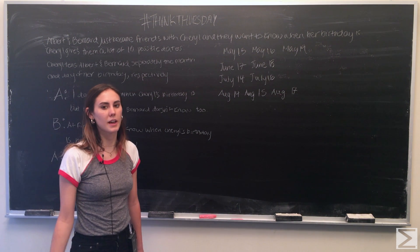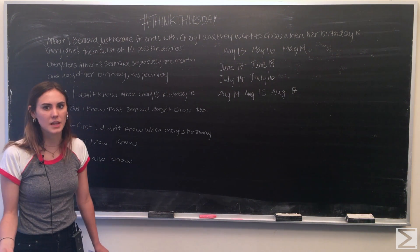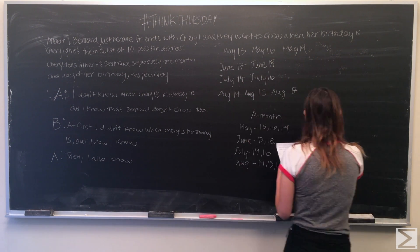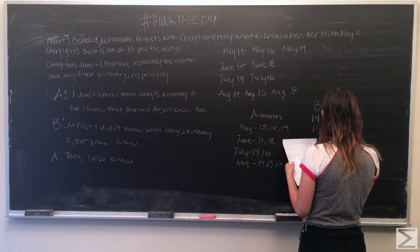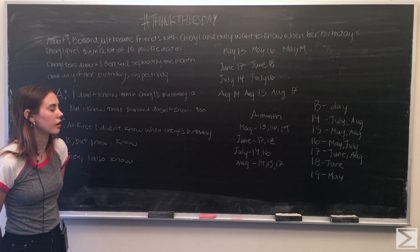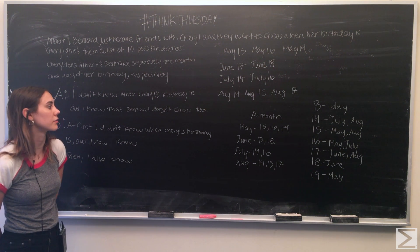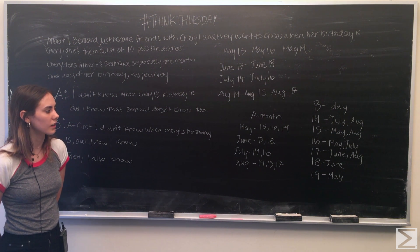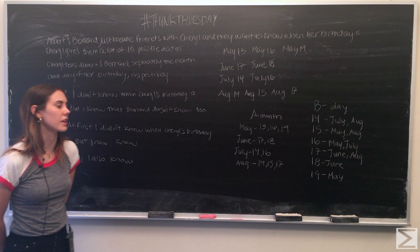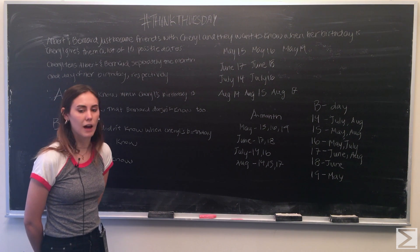To begin, the easiest way to approach this is knowing that Cheryl tells Albert the month and Bernard the day respectively. Let's make a table of what she basically tells them. You'll notice that if Cheryl would have told Bernard either the 18th or the 19th, he would already know exactly what the date of Cheryl's birthday is. So going forward we're going to keep that in mind, and just go through the different statements using deductive reasoning to work out her birthday.